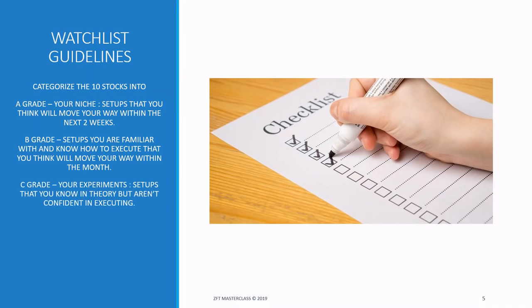C grade consists of experimental setups — you know the parameters and how they move, but you're not confident enough to execute. D grade is setups you're totally clueless about, and those are the ones we want to avoid. Whenever you see a setup, categorize it A, B, C, or D. As much as possible, we do not want to trade C and D setups — focus on A and B only.